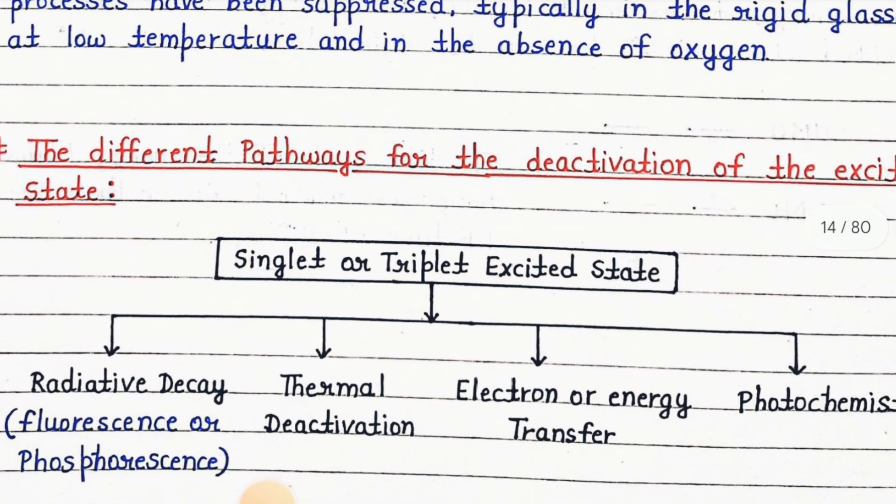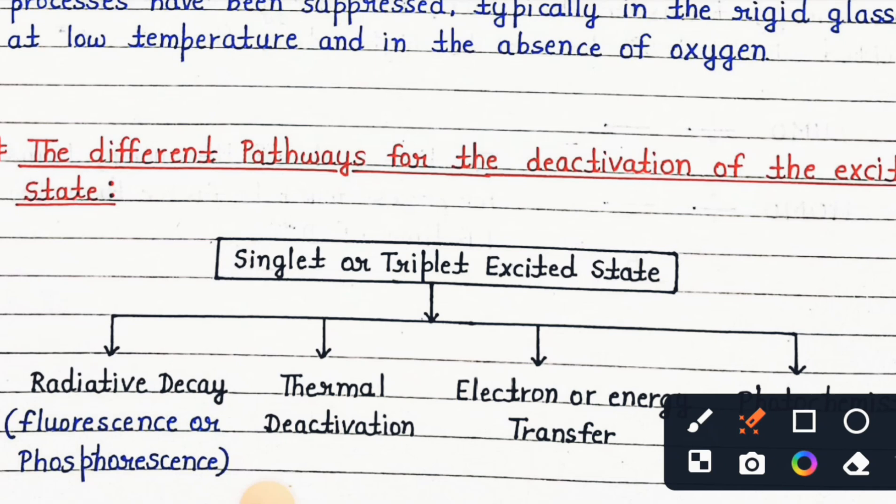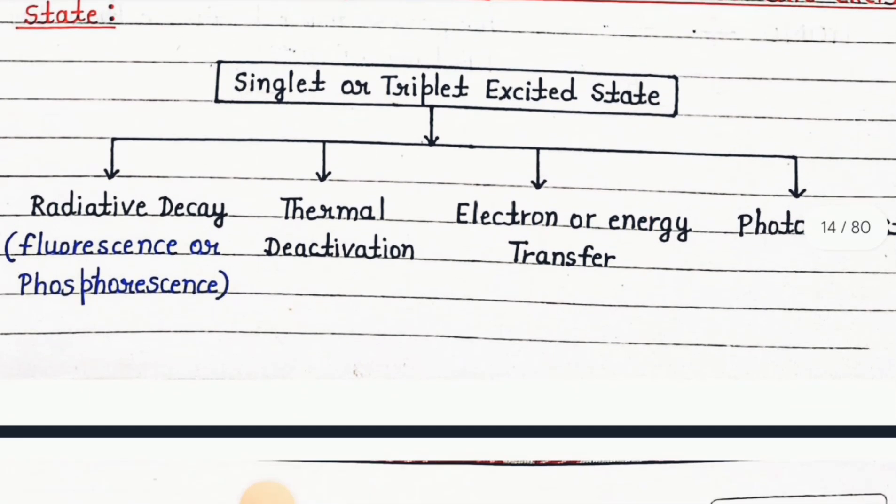The different pathways for the deactivation of the excited state, singlet or triplet excited state, fall into four categories: radiative decay (fluorescence or phosphorescence), thermal deactivation, electron or energy transfer, and photochemistry.